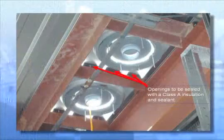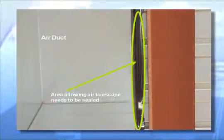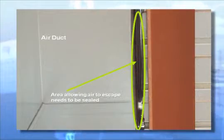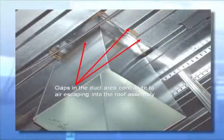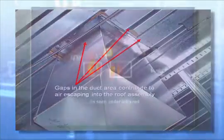Both require that all seams, penetrations, and transitions between the approved materials or assemblies are sealed. Uncontrolled air leakage will lead to increased energy usage in the building. As you can see here, the infrared image of the pipe penetration shows the potential for air leakage and energy loss.